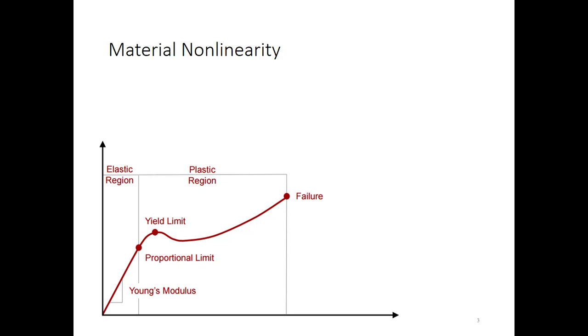So here's an example of material nonlinearity. We have a stress strain curve that changes as the strain increases. So we have a stiffness that responds to the displacement. That's nonlinear.